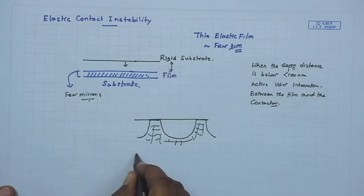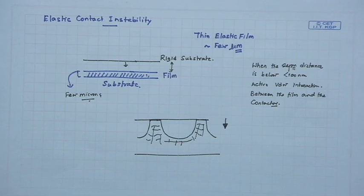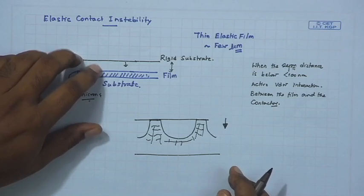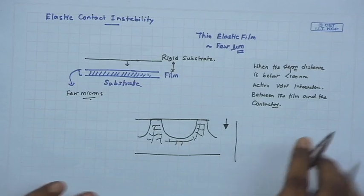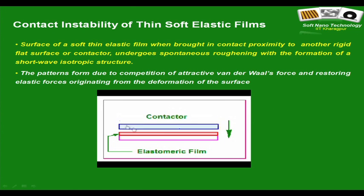Even after achieving this configuration, if the contactor continues to come into close proximity, the strength of the interaction between the contactor and the film increases, and therefore a greater fraction of the film comes into contact with the contactor. You have a contactor coming into contact with the soft elastic film, and before complete conformal contact there is a zone where the separation distance is again in the range of 100 nanometers. Therefore, there is active van der Waals interaction between the two, leading to self-organized instability structures on the film surface.